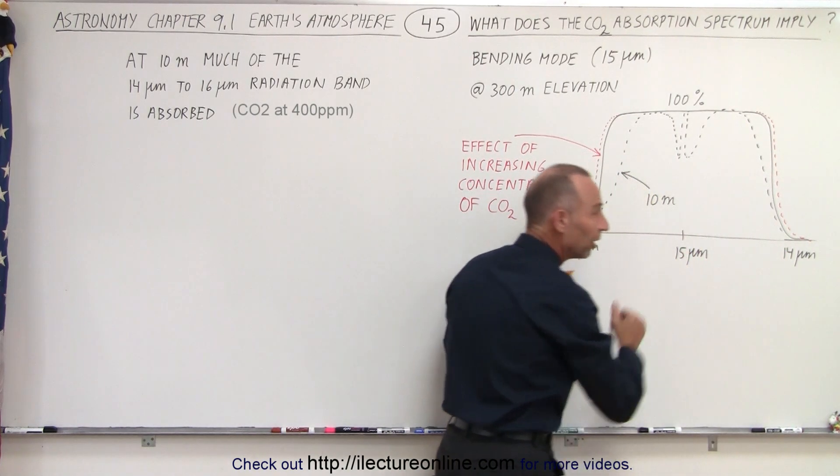These are centered about the 15 micrometer wavelength, which means it's the bending mode, vibrational mode, of carbon dioxide that is absorbing these particular wavelengths of the radiation leaving the surface of the Earth.